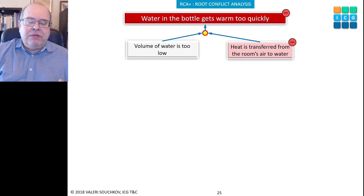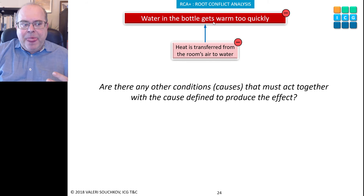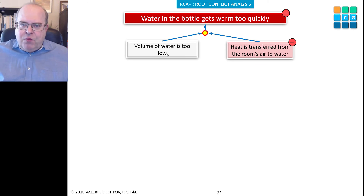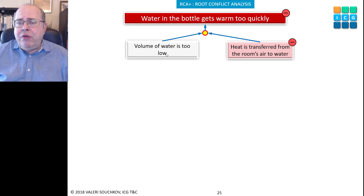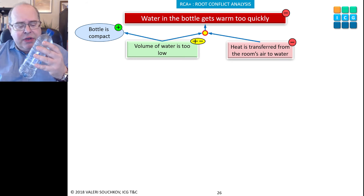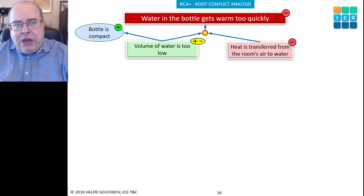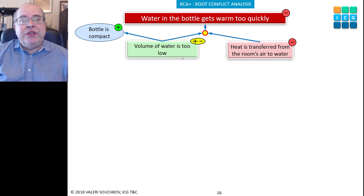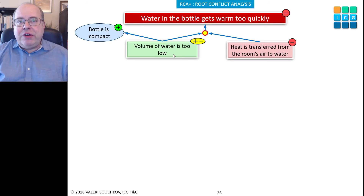The trick of looking for necessary conditions is to think about how to create the negative or undesired effect. For example, I think that if I had a lot of water in the bottle, it would take more time to get warm — so the volume of water is too low is a cause. We ask: is there any positive effect? Yes — the bottle is compact, lightweight, nice. So 'bottle is compact' is a positive effect for me as a problem owner. I tag this cause as a plus-minus contradiction cause and stop — I do not go deeper to ask what causes the volume of water to be too low, because the answer is already here.